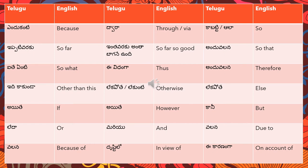'Aite' means 'if'. Aite can also be translated as 'however' - so 'aite ante' means if or however. 'Kaani' means 'but'. 'Leda' means 'or'. 'Mariyu' means 'and' - this and that, 'iti mariyu adhi'. 'Valena' means 'because of' or 'due to' - either 'due to' or 'because of'.